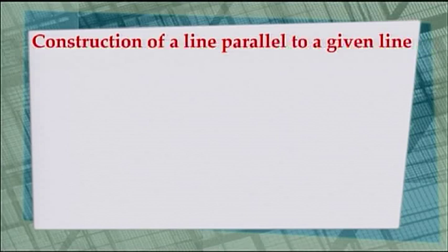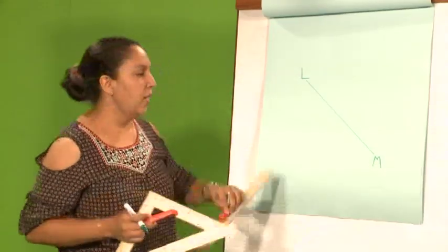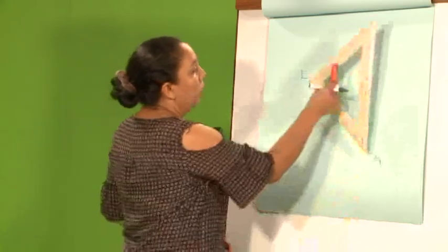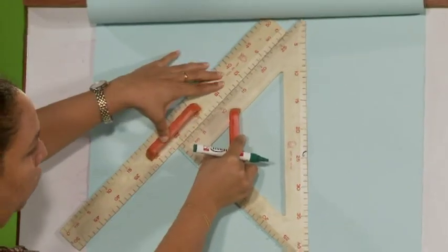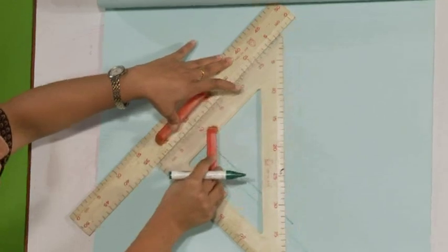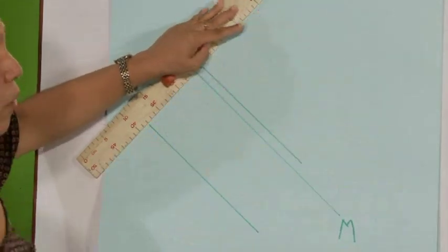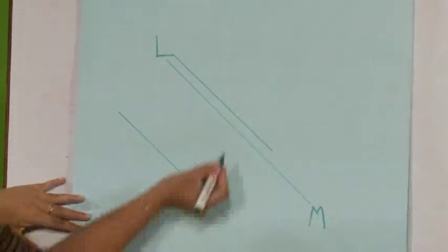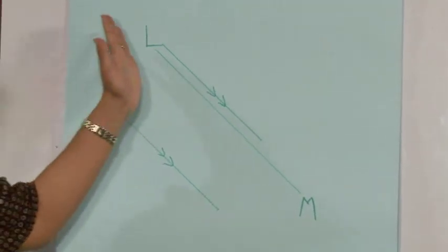Let's try another example. This line is what we call a slant line — you've done that in reflection. The method seems a bit more difficult, but the set square is always placed on the line and the ruler is perpendicular to the line. Then you just need to move it — slide it either up or down. We've got two parallel lines, parallel to LM.